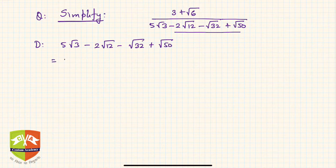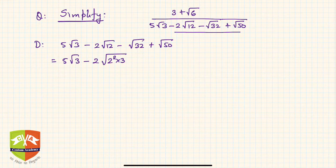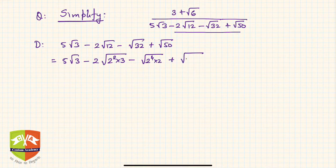We can reduce these terms. 5√3 minus 2√12: 12 can be written as 2² × 3. Then √32 can be written as 2⁴ × 2, and √50 can be written as 5² × 2.